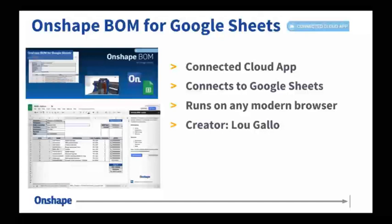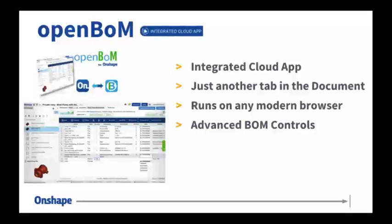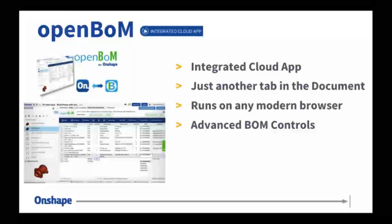With Onshape BOM for Google Sheets, you can even push data back into the document if you make changes. It was created by Lou Gallo, who works for the Onshape team. It runs on any modern browser. OpenBOM is integrated into the document — it's just another tab like your parts, drawings, or assemblies. It allows you to stay in that single environment without leaving Onshape.